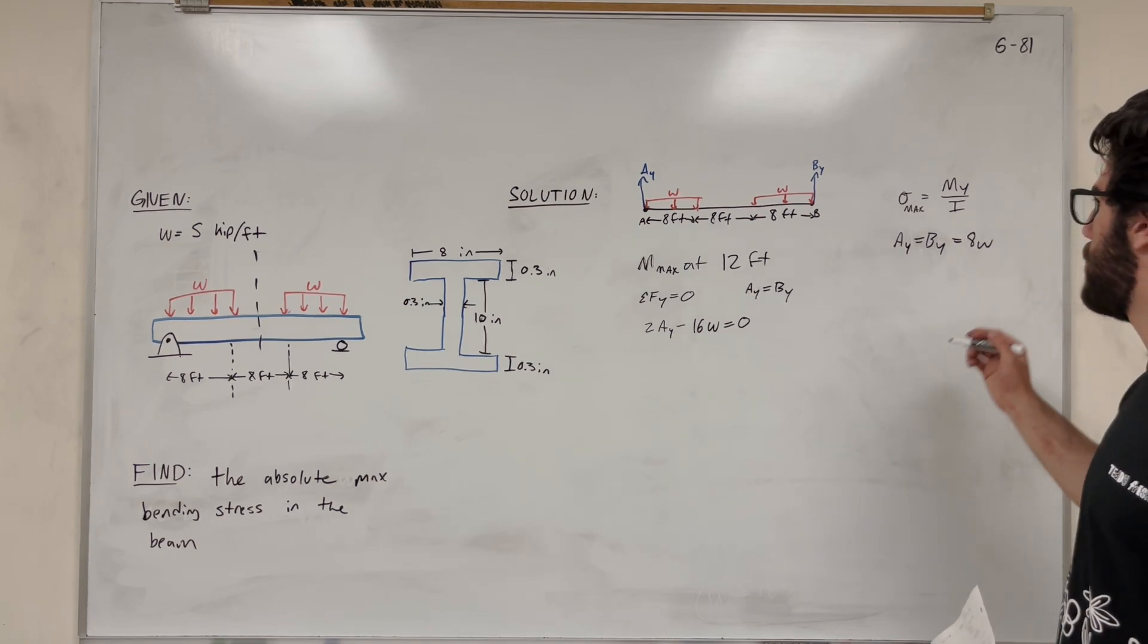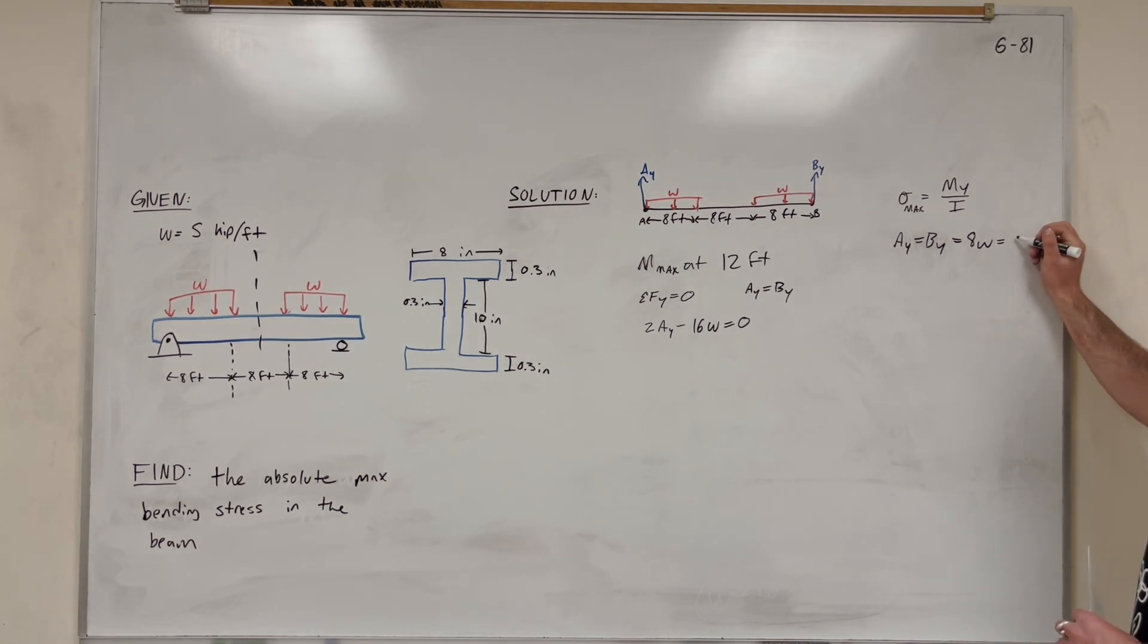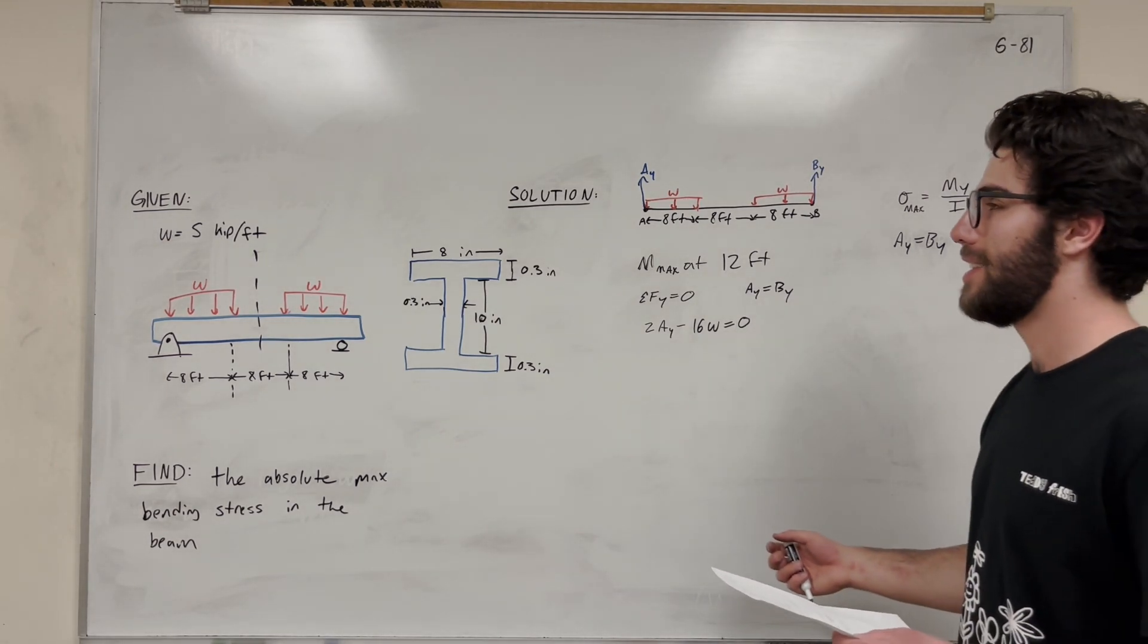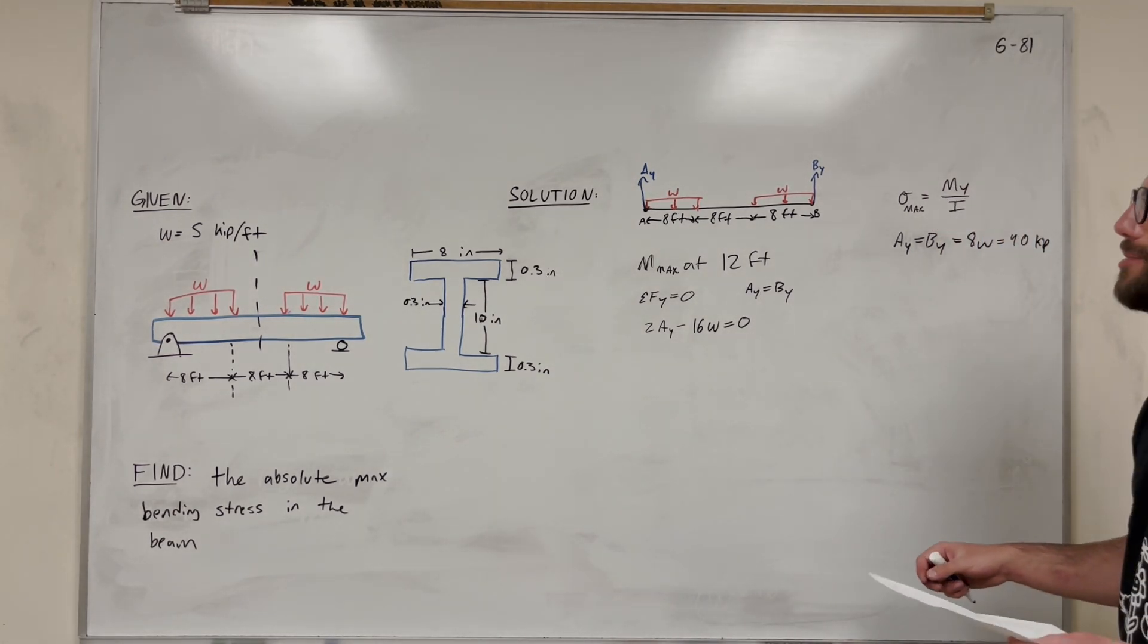So you're going to get that A_y is equal to B_y is equal to 8w. And so when you plug in w right here, we can get that's equal to, right? What is that? 40 kip. I hope that's right. I'm pretty sure it was. 5 times 8? Yeah. I'm trusting myself.